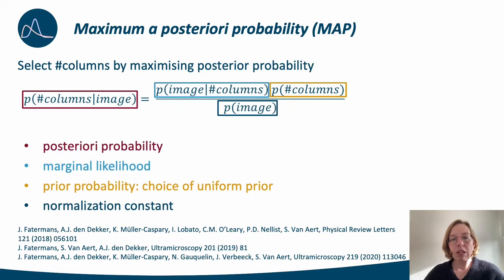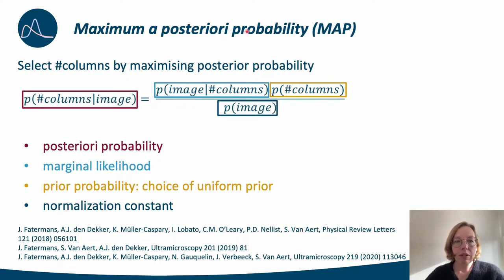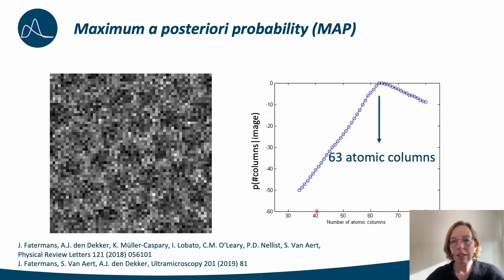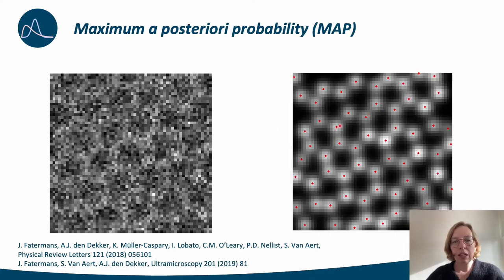To select the most likely atomic structure, we introduce the so-called maximum a posteriori probability rule, or MAP in short. With this MAP rule, we can predict the probability for a certain number of atomic columns given an experimental image. More details about the derivation of this MAP rule can be found in these papers. Here you see the evaluation of the MAP probability rule, predicting that the presence of 63 atomic columns is most likely. The corresponding refined model clearly shows the expected graphene lattice without using prior knowledge concerning the expected atomic structure.